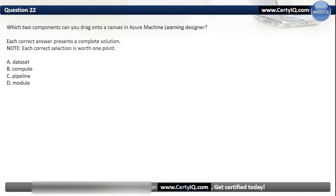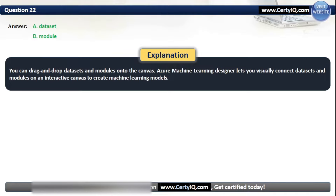Question 22. Which two components can you drag onto a canvas in Azure Machine Learning Designer? Options: A. Dataset, B. Compute, C. Pipeline, or D. Module. The correct answers are A and D — Dataset and Module. You can drag and drop datasets and modules onto the canvas. Azure Machine Learning Designer lets you visually connect datasets and modules on an interactive canvas to create machine learning models.